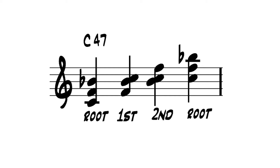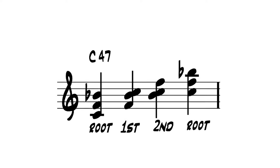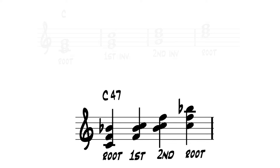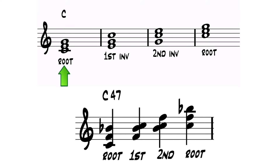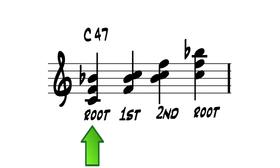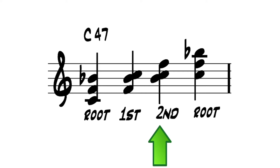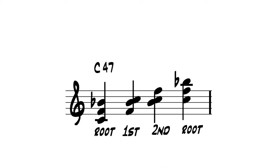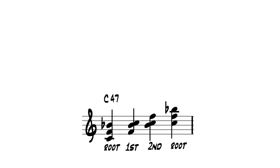I know what you're probably thinking right now — that's just a sus2 or a sus4 chord. Yes, they are. But we want to see them as inversions of quartals, exactly as we see inversions of triads. Root, first inversion, second inversion — they're all a C triad to you, aren't they? Well, that's how I want you to look at these inversions as well: C4,7 root, first inversion, and second inversion. This will become very handy later on when we start looking at quartals as upper structures. Trust me.